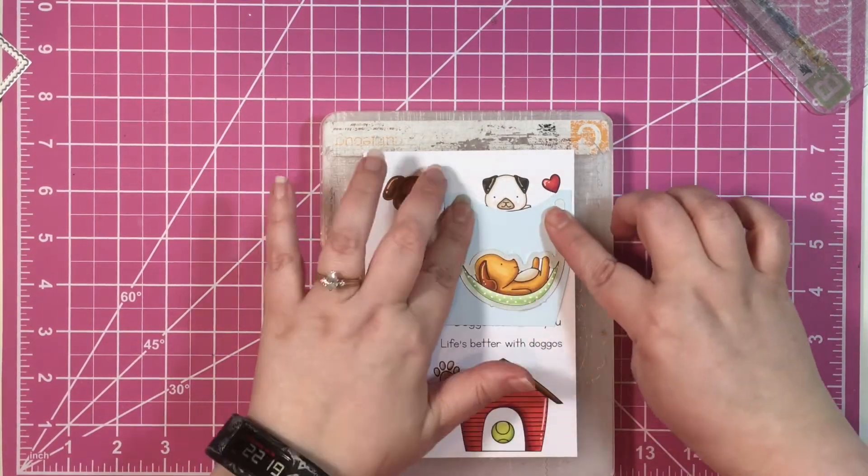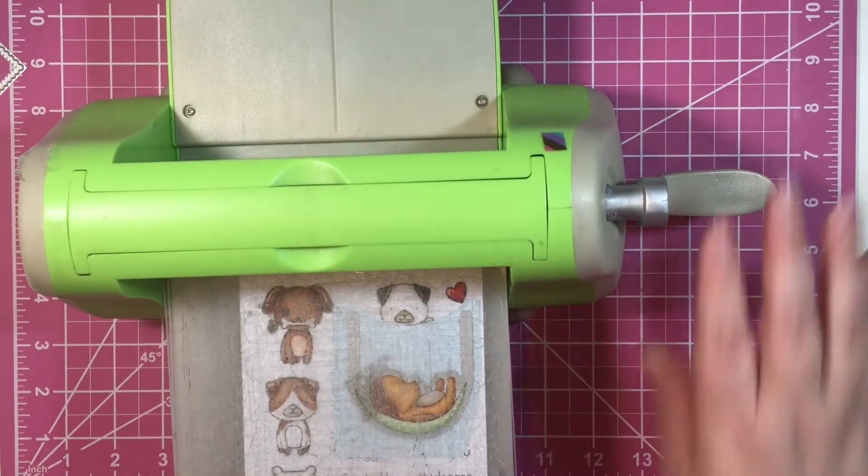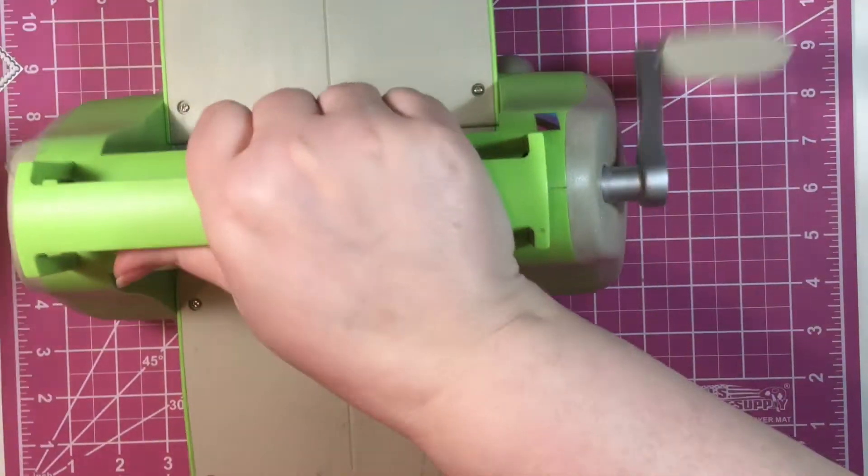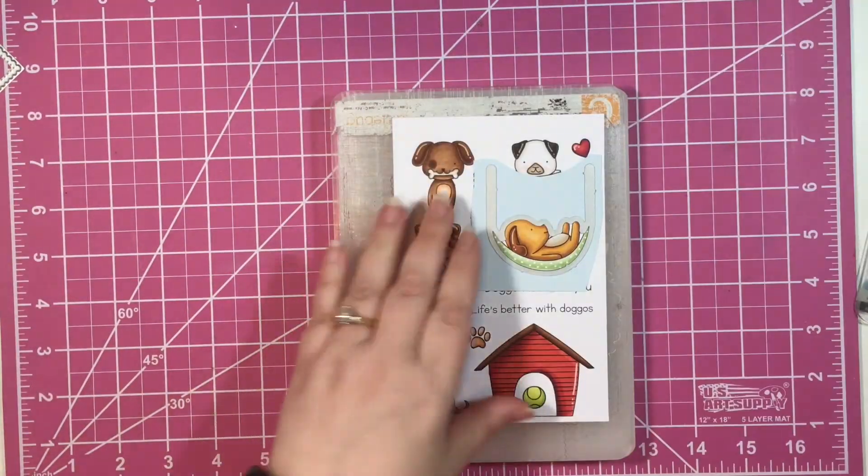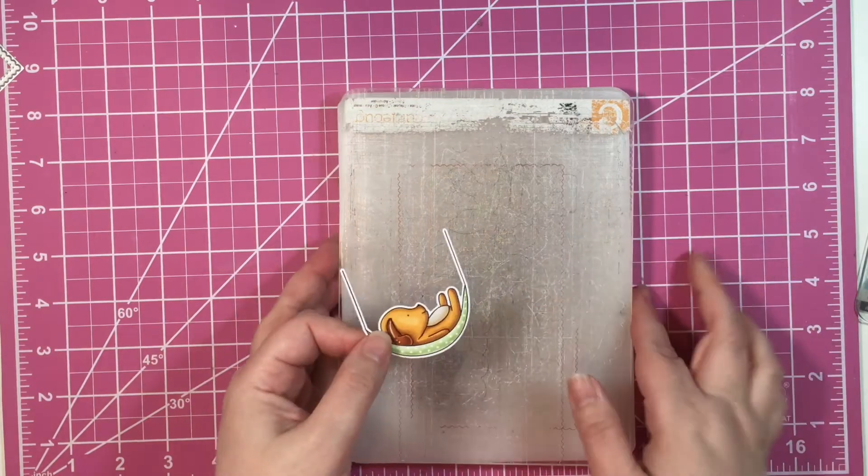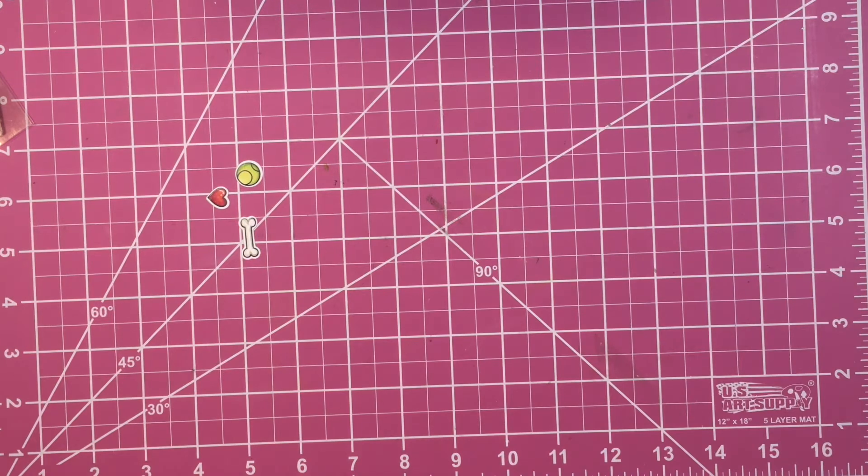I get him all taped down ready to go and I cut him out, and he turned out perfectly. I love this technique so that you can have it just right and it's not off. After you've taken all that time coloring that image, to then mess it up because the cut was off just a little bit, that just kind of stinks.